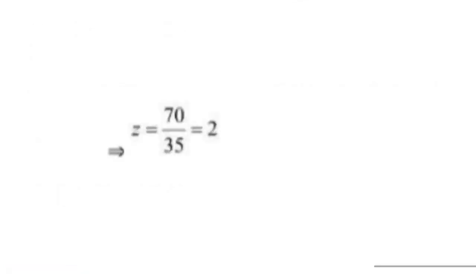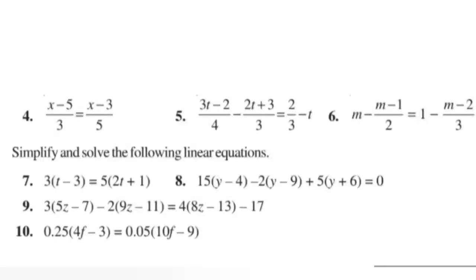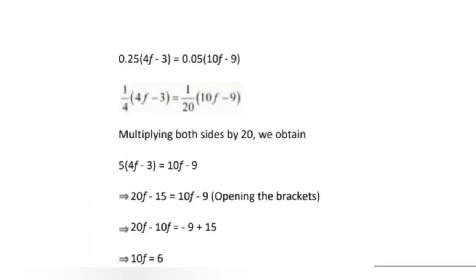Question number 10 - simplify and solve: 0.25 times (4f minus 3) equals 0.05 times (10f minus 9). We can write 0.25 as 1 upon 4 and 0.05 as 1 upon 20. Multiplying both sides by 20 - the LCM - the left hand side gives 20 upon 4 which is 5, so 5(4f minus 3). The right hand side: 20 upon 20 cancels, leaving just (10f minus 9).